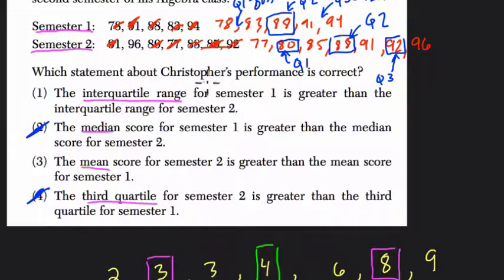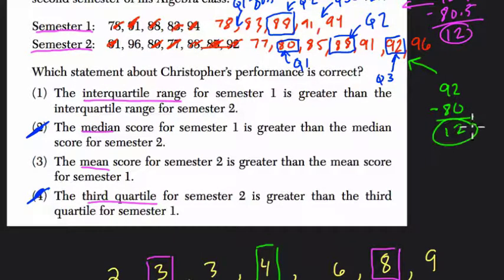The interquartile range, let's find that next. All right, so in the first one, it's right over here, 92.5 minus 80.5, right? And what's that? Well, that's just 12, right? So our IQR is 12 in the first case. And the second case, 92 minus 80 is also 12. So the interquartile ranges are the same. So the interquartile range for semester 1 is greater than the interquartile range. That's not true.